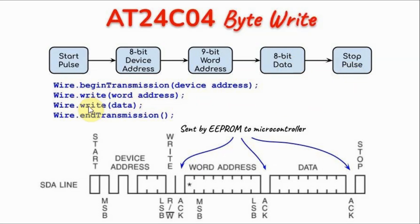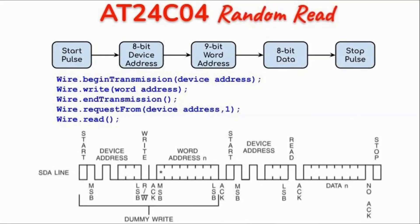A stop pulse is then sent to indicate the end of transmission, and these are the wire functions needed to implement the write operation. To random read from any memory location of the EEPROM, the Arduino will first send a start pulse, then the 8-bit device address to locate one of the 4 EEPROMs, then write the 9-bit word address to allocate the memory location to read from, then read the 8-bit data stored in that location and send it to the Arduino, followed by a stop pulse.